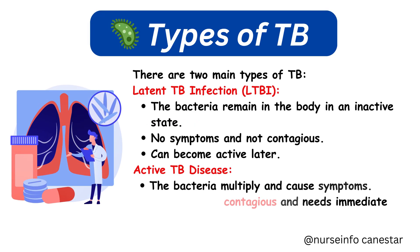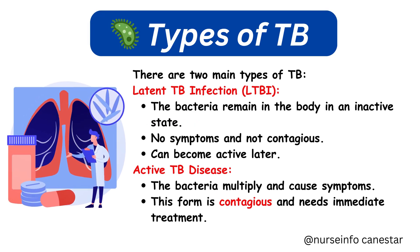There are two main types of TB. One: latent TB infection, or LTBI — the bacteria remain in the body in an inactive state, there are no symptoms and it is not contagious, but it can become active later. Two: active TB disease — the bacteria multiply and cause symptoms. This form is contagious and needs immediate treatment.